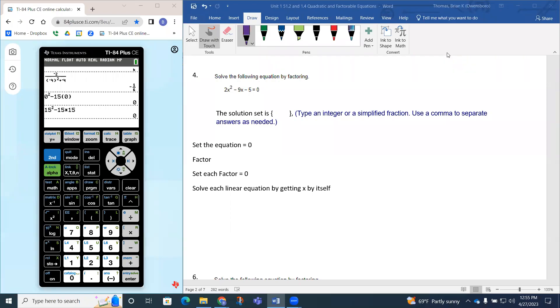Question four says solve the following equation by factoring: 2x squared minus 9x minus 5 equals zero. To solve a quadratic equation by factoring, the first step is set equal to zero. The right hand side is already zero, so our next step is to factor.